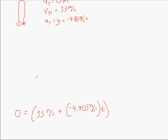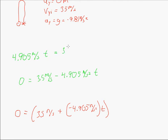Now let's solve for the other root. Setting the bracket to zero: 0 equals 35 minus 4.905·T. Moving terms over: 4.905·T equals 35. Dividing both sides gives you the time. You should get a time near 7 seconds — something roughly about 7 seconds.